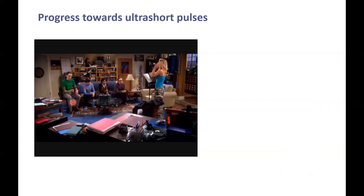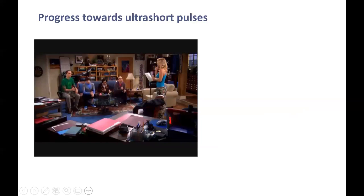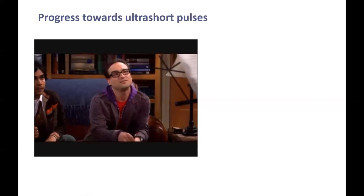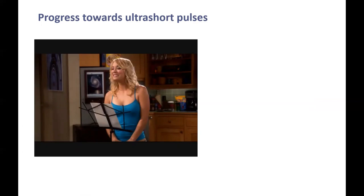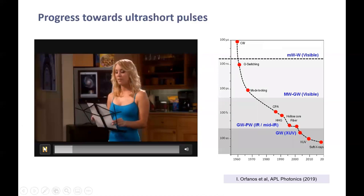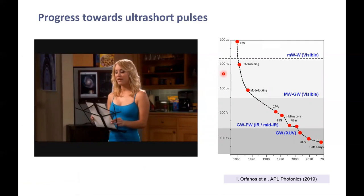So now comes the question: how short is a pulse? For this, we have the Wigner theory. This 130 attosecond was an old record — this is from a paper from 2006. The current record, if I remember properly, is around 45 attoseconds, achieved in 2017. The next question that comes to mind is: how do we achieve such short pulses? For this, we have to review the optical techniques that have been developed over time and the breakthroughs associated with them.